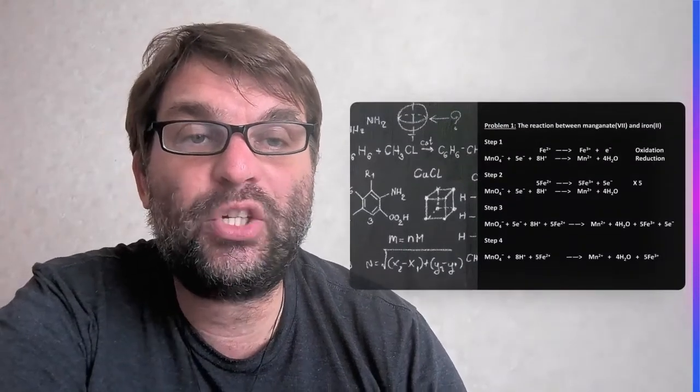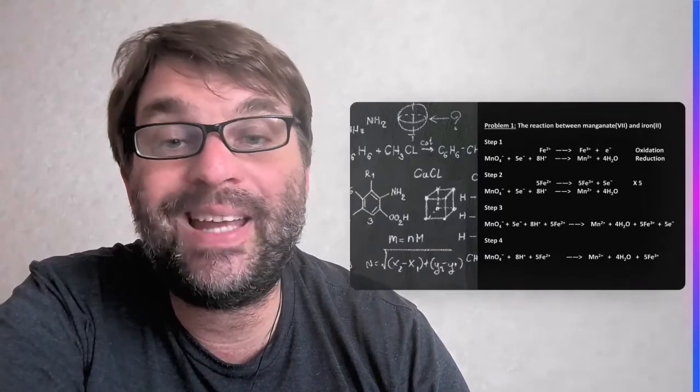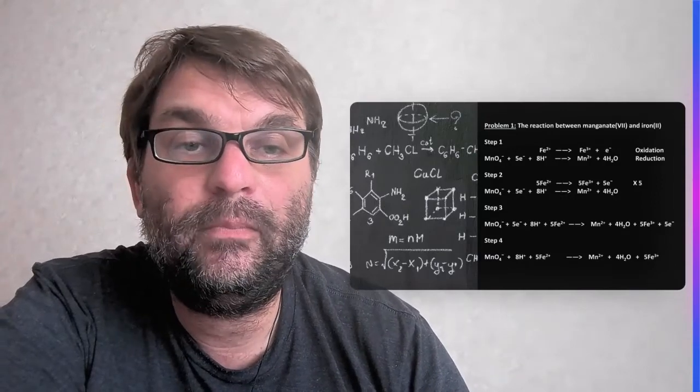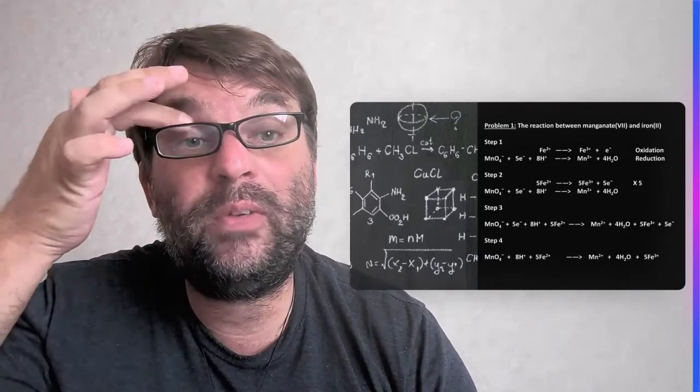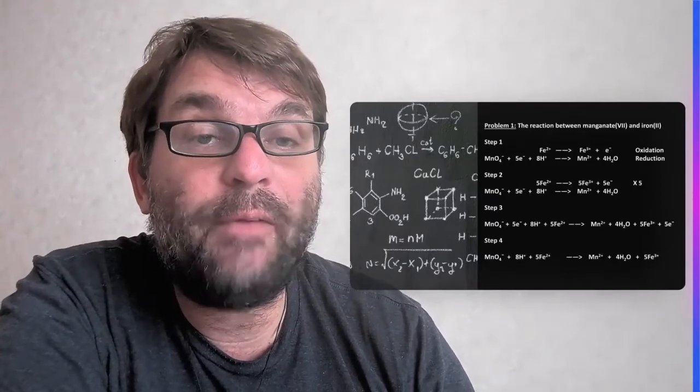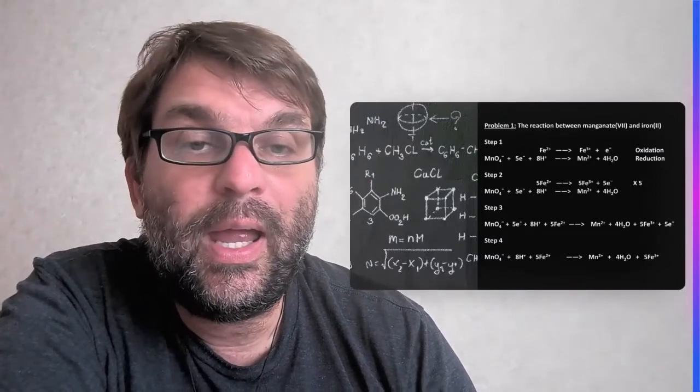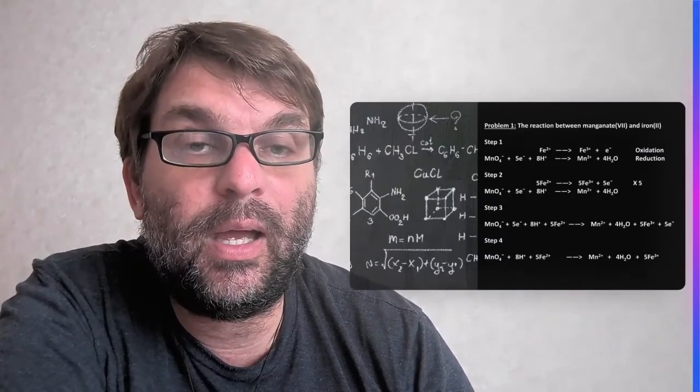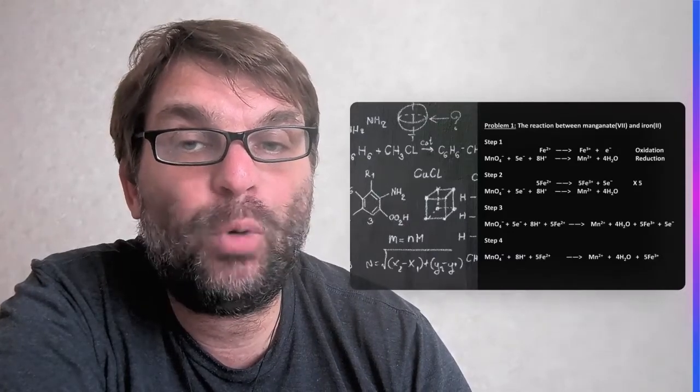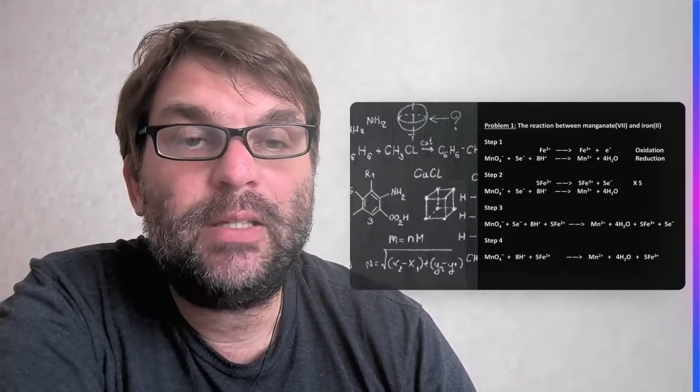So the example we're going to use is a reaction between the permanganate anion and the iron 2 cation. So you can see in step one, we've now just placed the half equations down - the oxidation half equation of iron 2 plus going to iron 3 plus plus one electron, and then the permanganate turning into the manganese 2 plus. It's the reduction half equation. Step two, then what we're doing is we're going to multiply the top one by five, because it's only got one electron, whereas the bottom equation has five. So that's 5 Fe^2+ going to 5 Fe^3+ plus five electrons. That means now the electrons can cancel out.